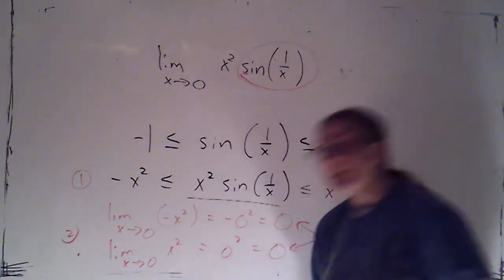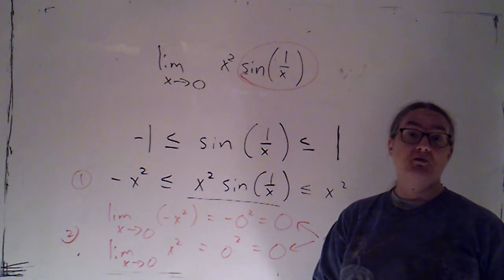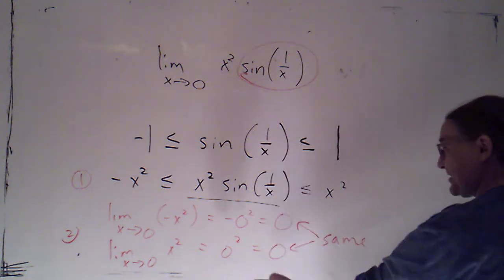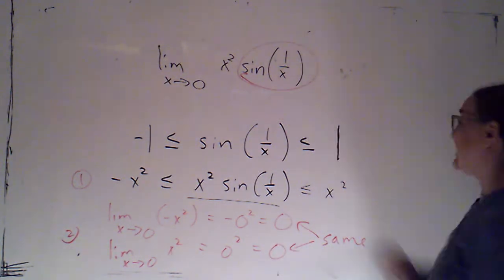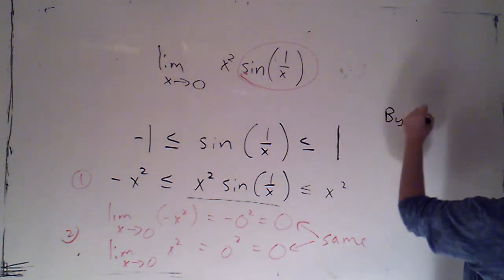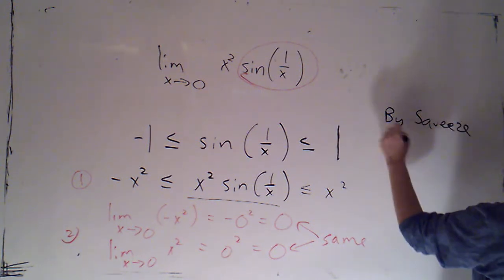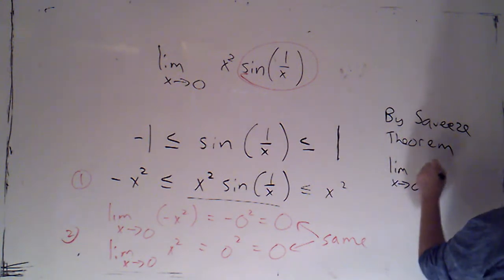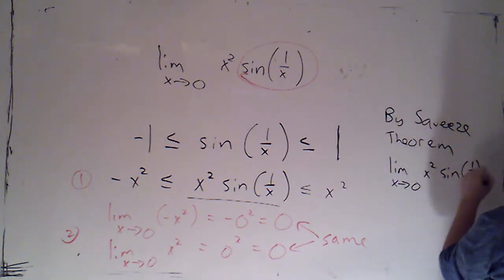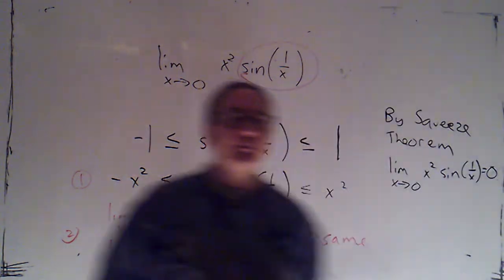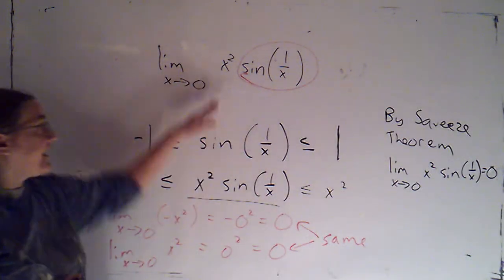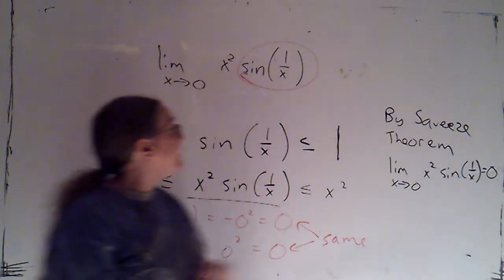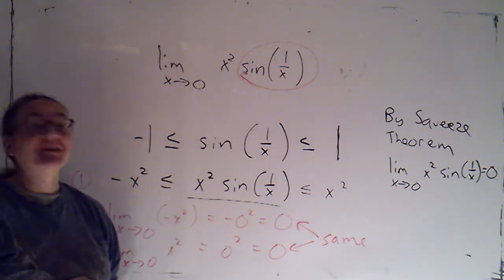Both conditions are satisfied, so now I know that the conclusion of the squeeze theorem holds. Don't forget to state it — this is what I was trying to show. By the squeeze theorem, the limit as x→0 of x²·sin(1/x) is also 0. That's a limit I don't think we would have been able to evaluate without using this theorem, so it really is helpful to have it.